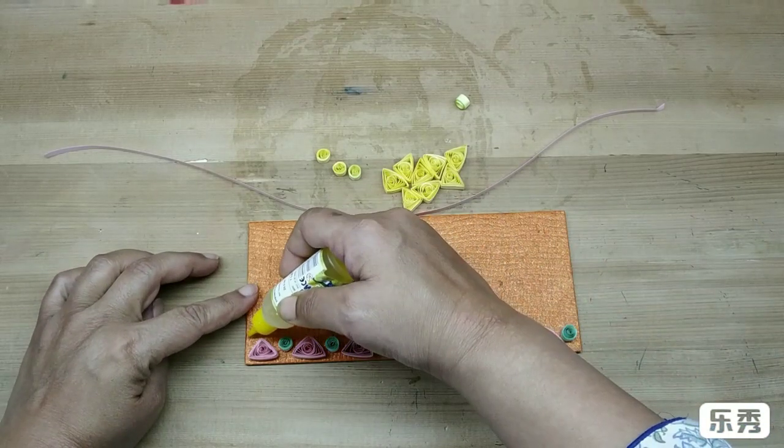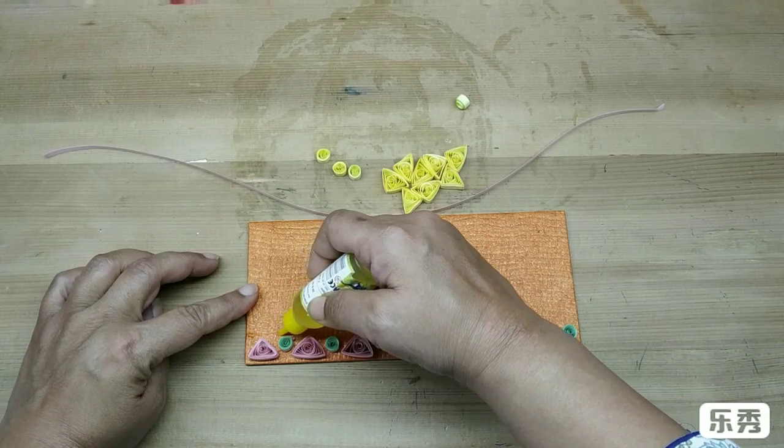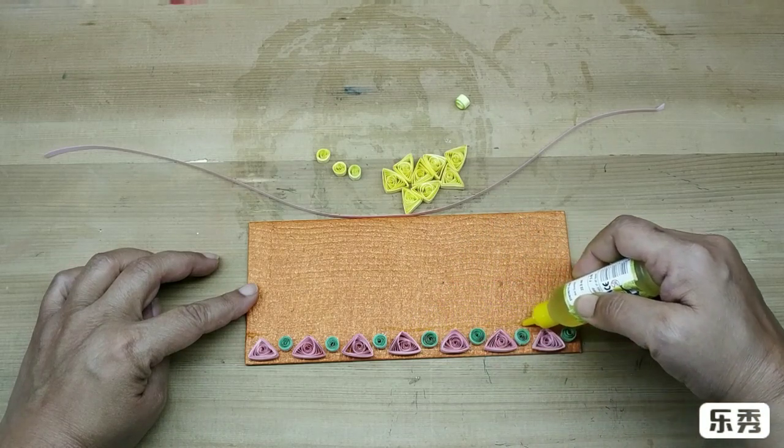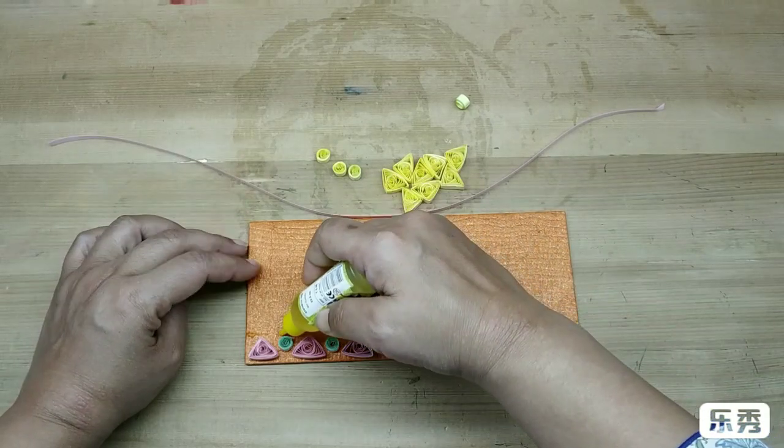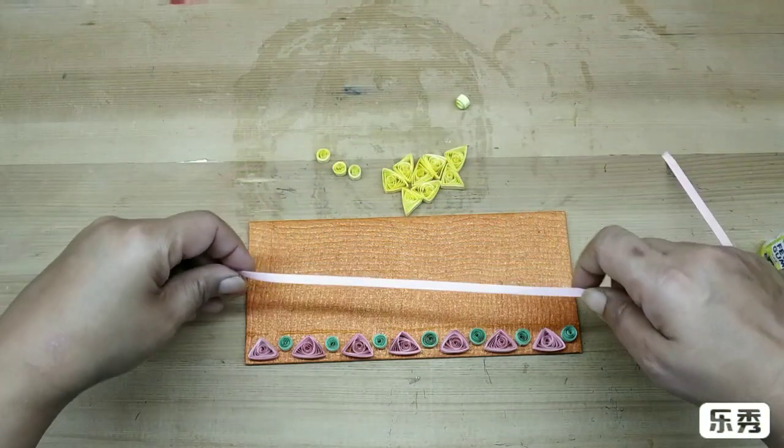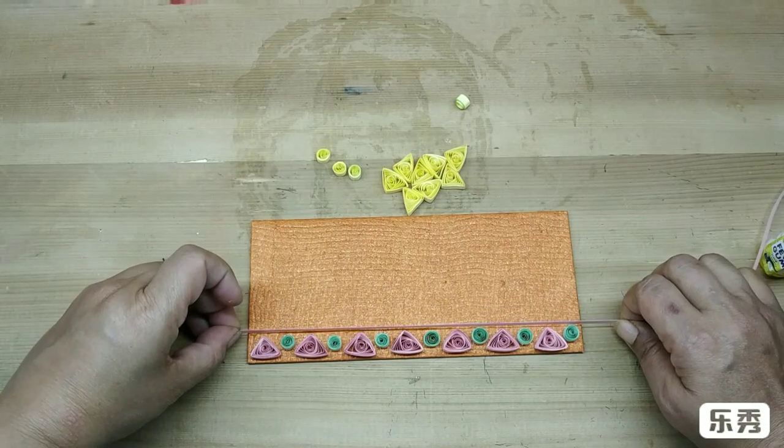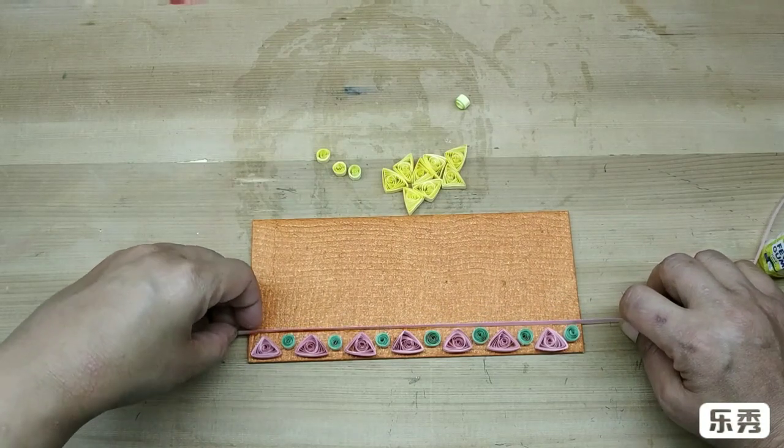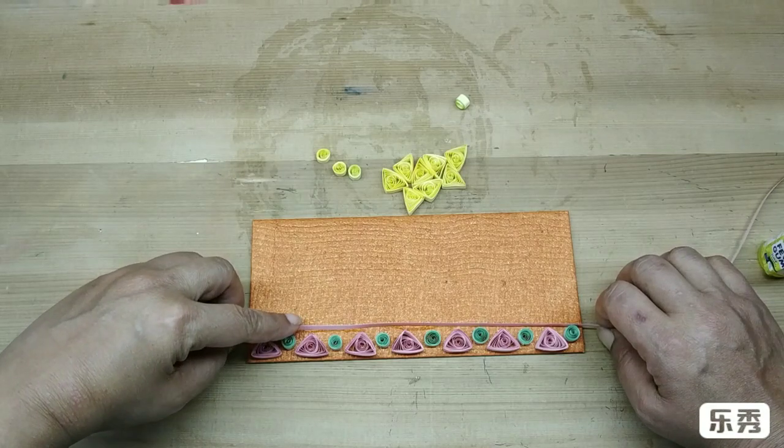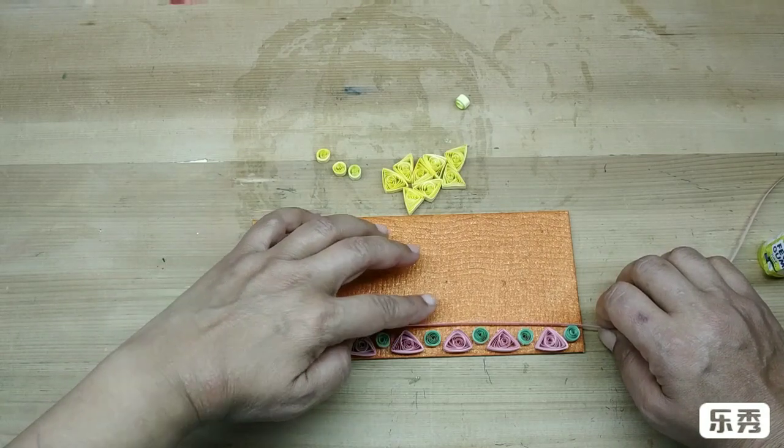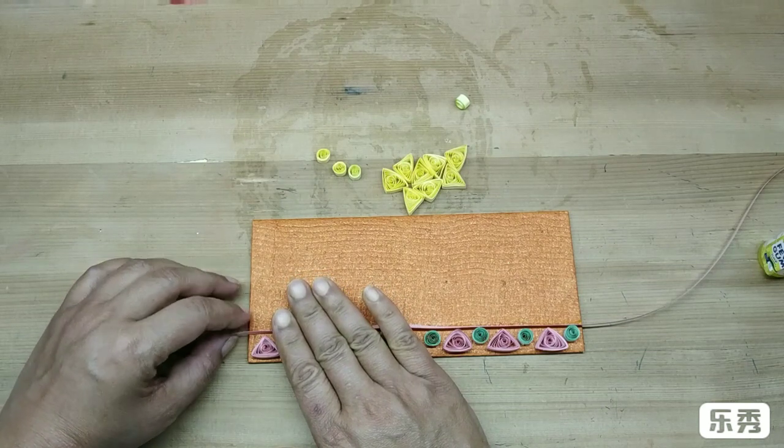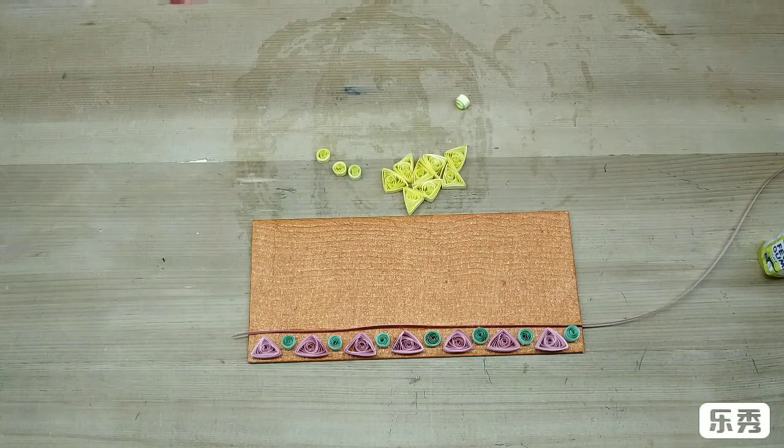After I put the border I am just going to put glue in a straight line. Take a pink strip and I will just stick it on it. Like this and let it dry.